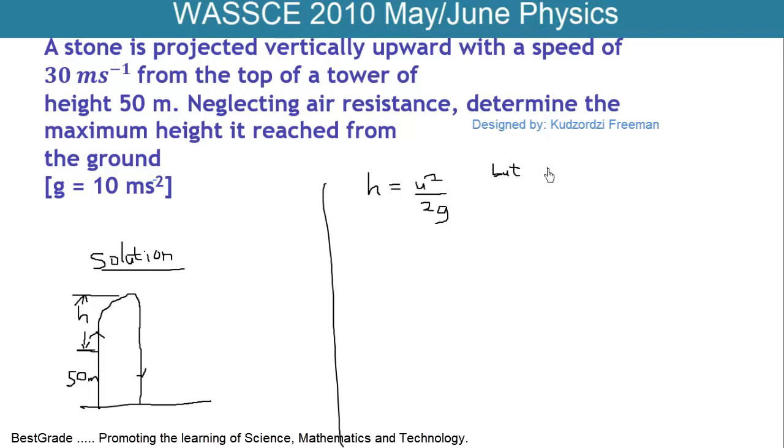The initial velocity U is equal to 30 meters per second. 30 meters per second. And G.